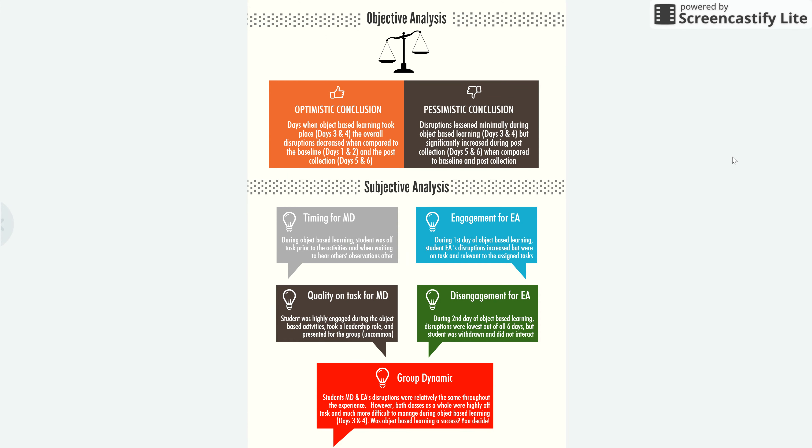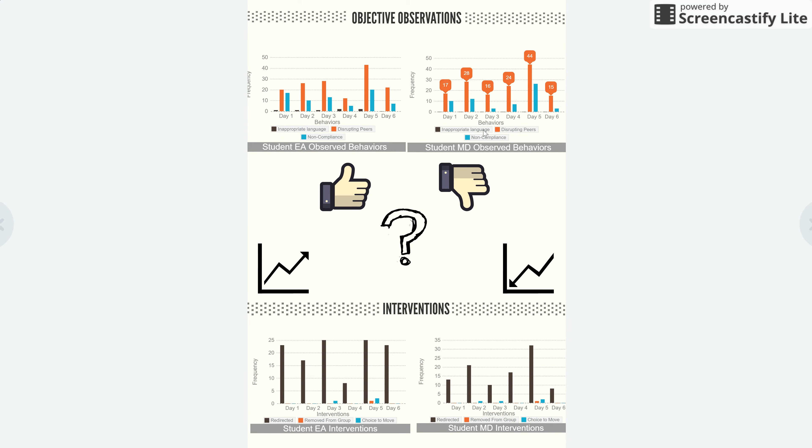With EA as well, he was engaged. When both were disrupting the class, the disruptions tended to be about the actual activity as opposed to random disruptions unrelated to the classroom. So the quality of MD's disruptions actually improved even though his overall disruptions went up slightly. However, on day four of data collection EA dropped the most — disruptions went down to 12 — but this was the most disengaged either student had been during the entire process. He was withdrawn and did not interact, which is not what I was looking for. I want all students to be involved and enjoy the benefits of learning.